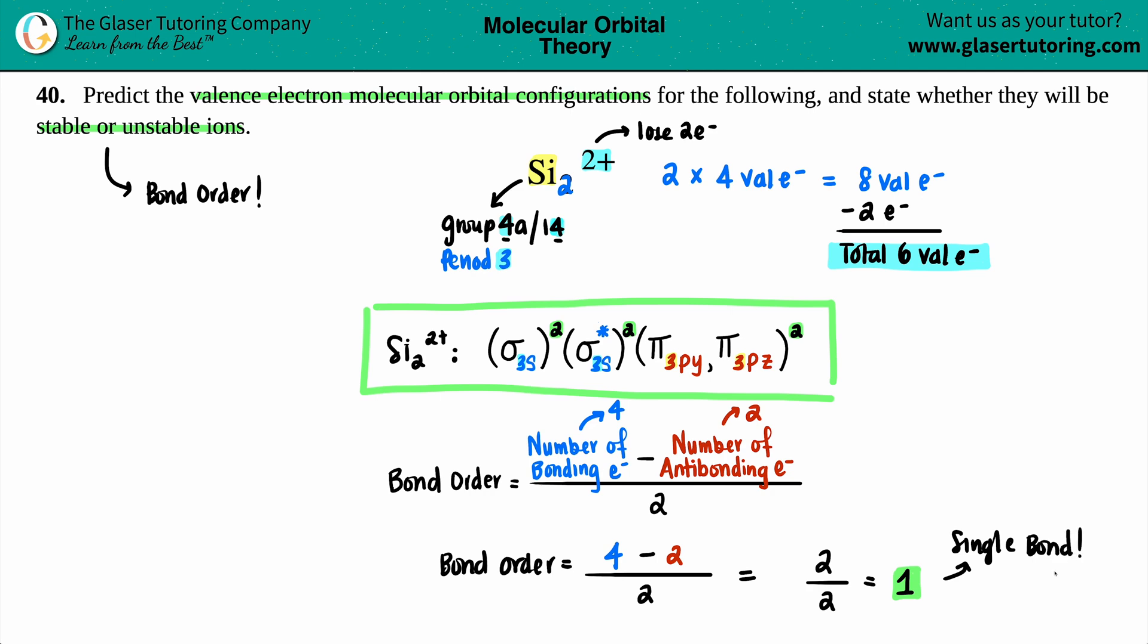If you can make a bond, this would be classified as a stable ion. Once again, if you have a bond order of zero, no bonds are going to be formed and it's not going to be stable.